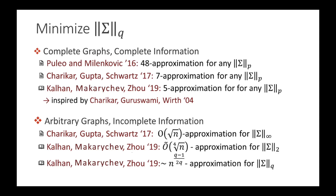In our paper, we give new results for correlation clustering in the Lq norm for any q. On complete graphs and bipartite graphs, we achieve a 5-approximation, which improves over the previous 7-approximation. We also give the first approximation algorithms for correlation clustering on arbitrary graphs in general Lq norms. In particular, in the L2 norm, we get a 4th root of n approximation.